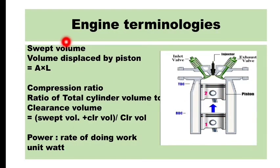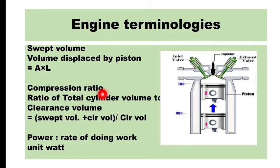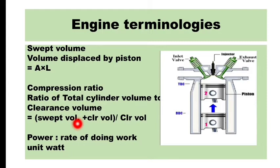Clearance volume is the remaining volume when the piston is at TDC. Compression ratio is the ratio of total cylinder volume to clearance volume. Total cylinder volume is the sum of swept volume and clearance volume, so compression ratio equals swept volume plus clearance volume divided by clearance volume. Simple MCQ questions are asked — for example, if you know swept volume and compression ratio, find clearance volume, and vice versa.